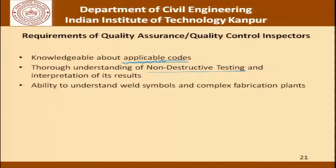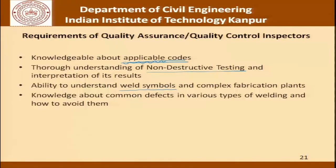The inspector must also have the ability to understand weld symbols and complex fabrication plans. There are all kinds of symbols used in drawings to indicate different kinds of welds, and the first thing to be seen is whether the welding has been done as prescribed by the designer on the drawing. The drawing itself gives a very important clue as far as the quality of design that has gone into welding. The inspector must also have knowledge about common defects in various types of welding and how to avoid them — sometimes the inspector's job is also to educate welders and tell them what precautions can be taken to avoid a particular defect. And excellent communicative skills — a soft skill that all inspectors, and as a matter of fact all engineers, must have.